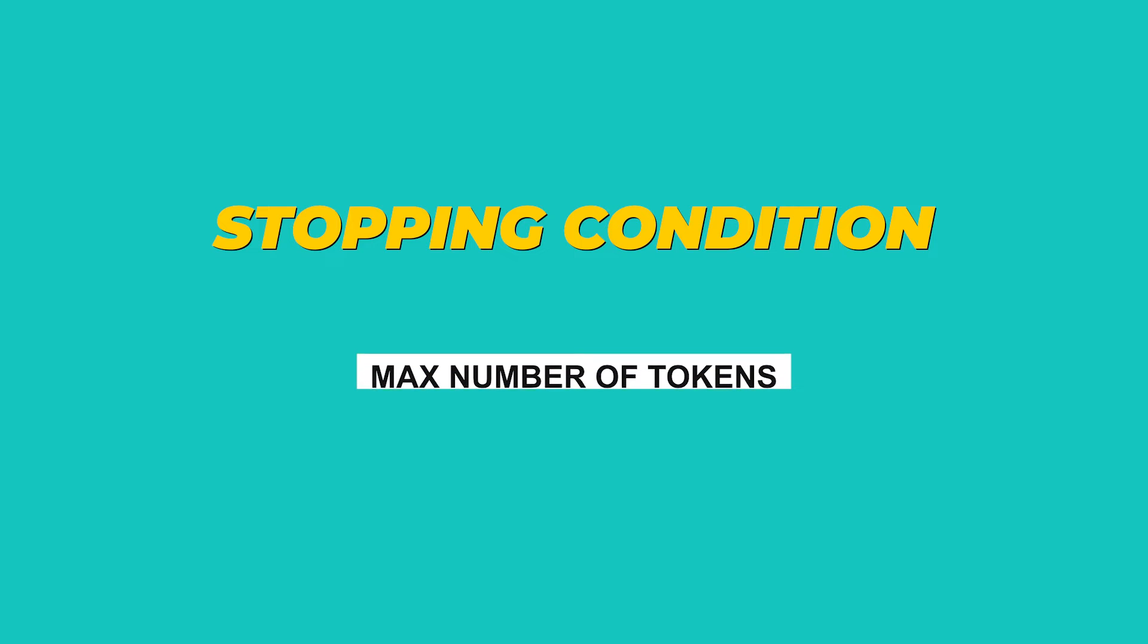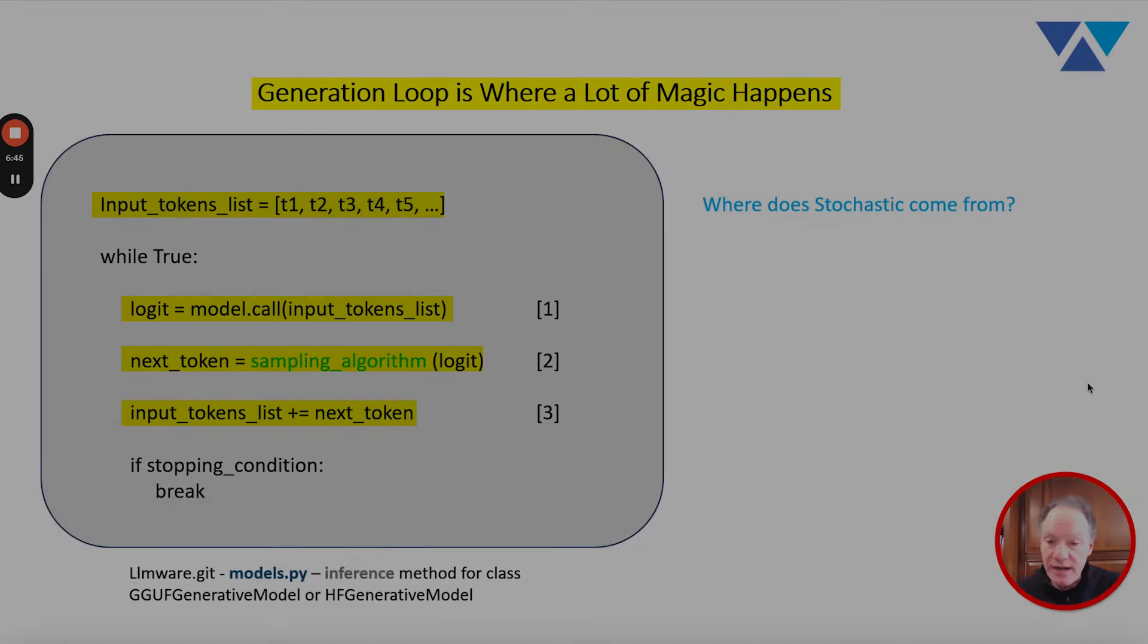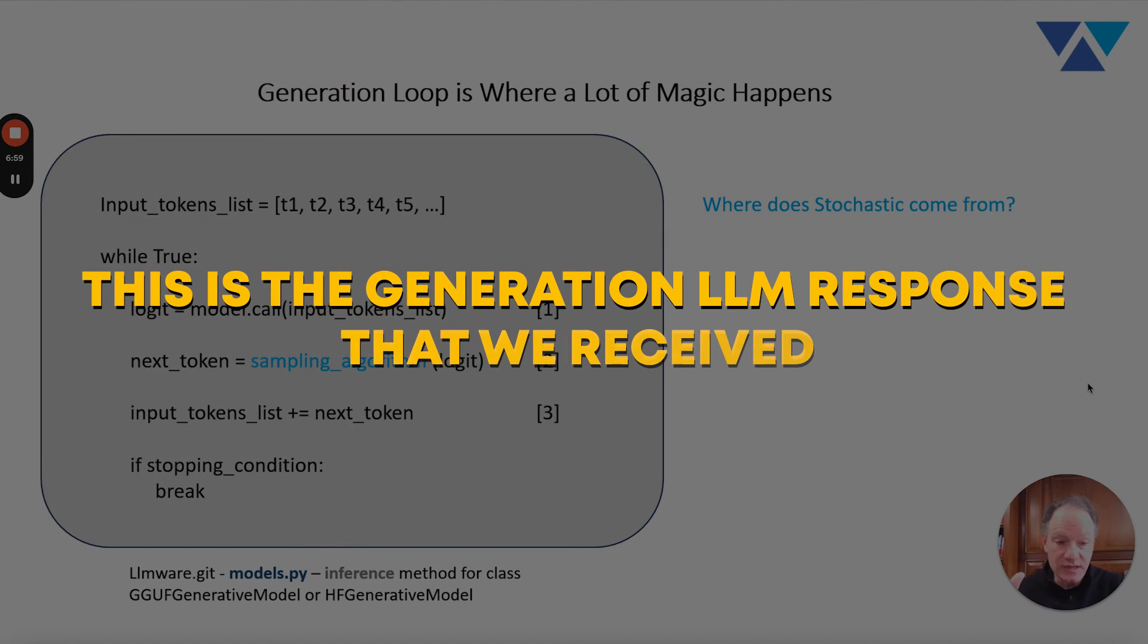We repeat steps one through three until we receive some type of stopping condition. The stopping condition could be a max number of tokens, it could be an end token that we received, it could be any number of other factors that we've said stop if the following occurs. But at its core, this loop continues to call the model, sample from the probability distribution represented by the logit, add to that context, and it keeps going until it's done. And then we get the beautiful output that is the generation LLM response that we received.